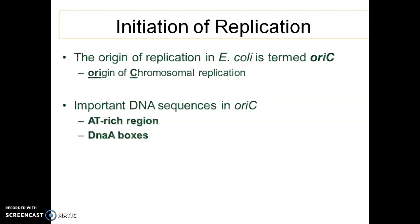Topoisomerase or DNA gyrase introduces negative supercoiling to remove the positive supercoiling and relieve the tightly supercoiled DNA inside the nucleus during DNA replication. The origin of replication always consists of a particular conserved sequence, and in E. coli or prokaryotes, that conserved sequence is known as OriC — the origin of chromosomal replication.